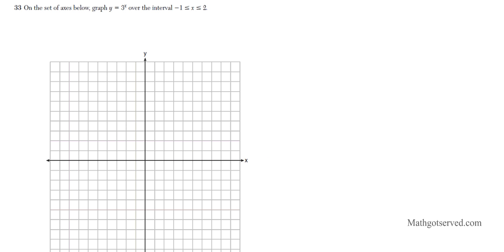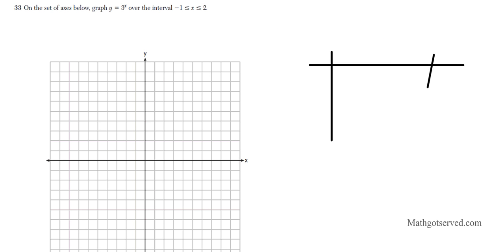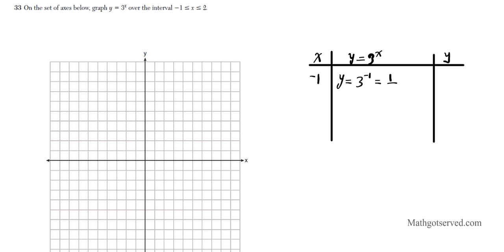Let's move on to question 33. It says: on the set of axes below, graph y equals 3 to the x over the interval negative 1 less than or equal to x less than or equal to 2. Let's make a table of values. For x equals negative 1: y equals 3 to the negative 1, which equals 1 over 3, because a negative exponent means you reciprocate.